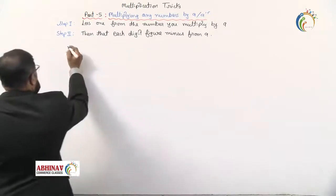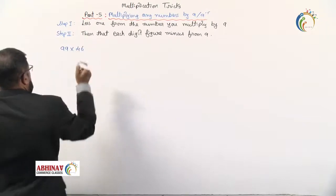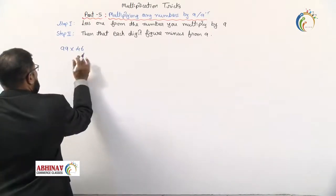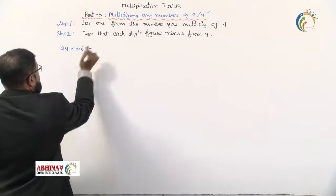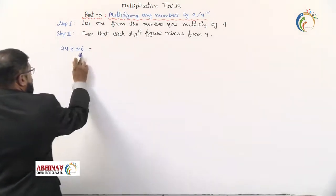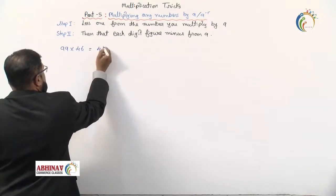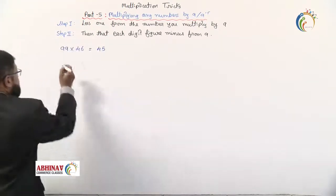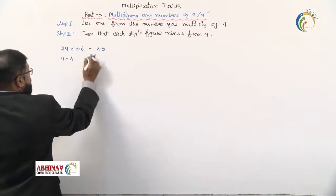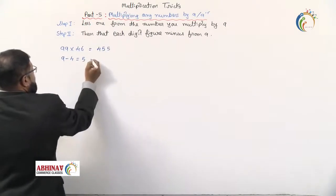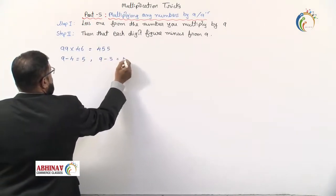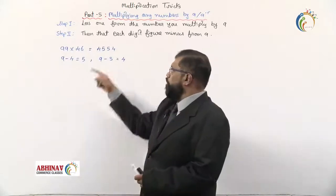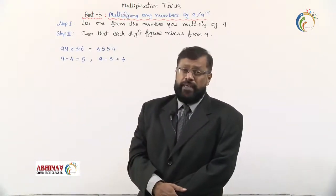Let's try 99 × 46. Both are two-digit numbers. Subtract 1 from 46 to get 45. Now subtract each digit of 45 from 9: 9 minus 4 gives 5, and 9 minus 5 gives 4. So 99 × 46 equals 4,554. That's your answer without a calculator.